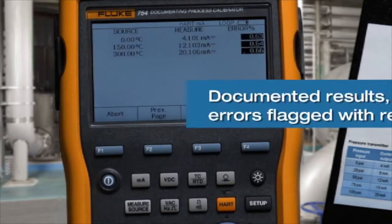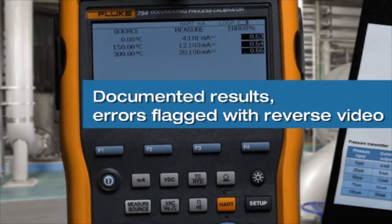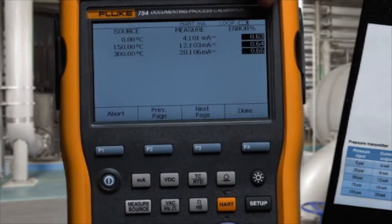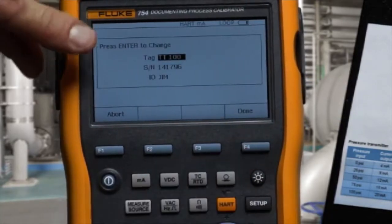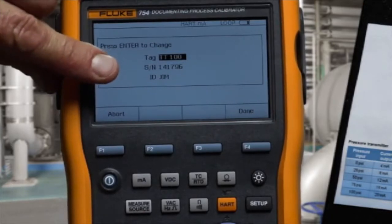When the test is complete, the applied temperature, milliamp value, and error percent of span is recorded. Select done. The tag and the serial number and the ID of the person doing the work is recorded.